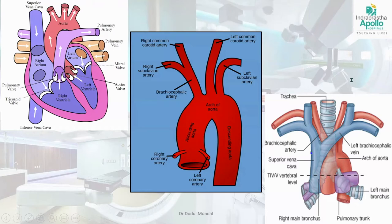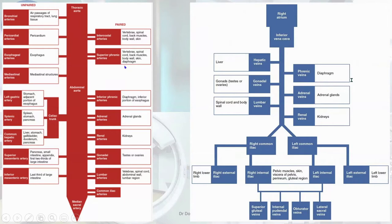We also need to note the right and left main bronchus and their association with the pulmonary artery. A schematic diagram shows the major arteries and branches: the thoracic aorta continuing as the abdominal aorta, with unpaired and paired arteries. The schematic representation of veins shows how they form inside the pelvis and abdomen. The external and internal iliac veins form the common iliac vein, which unites to form the inferior vena cava, receiving tributaries such as the renal vein, adrenal, phrenic, hepatic, gonadal, and lumbar veins. The left renal vein crosses the midline to drain into the inferior vena cava.